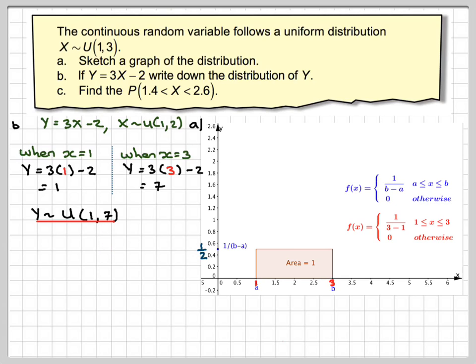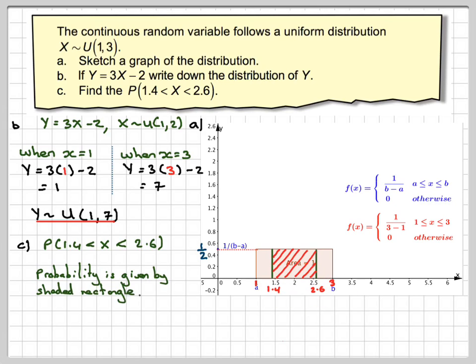In the last part, we're asked to find the probability of X lying between 1.4 and 2.6. So if we mark 1.4 and 2.6 on our diagram, that shaded area is what represents the probability. This is just a rectangle, so we don't really need to use integration here. We can find the probability by doing 2.6 minus 1.4, which gives you that length there, times the height of the rectangle, which is a half, 0.5. That gives 1.2 times 0.5, and that gives 0.6.